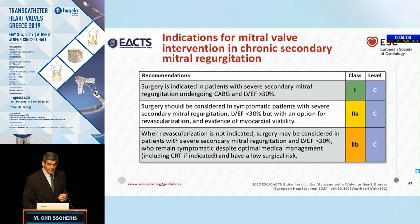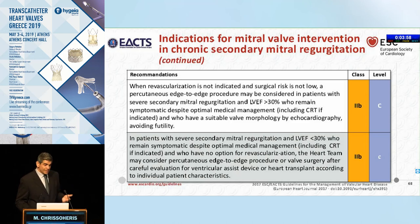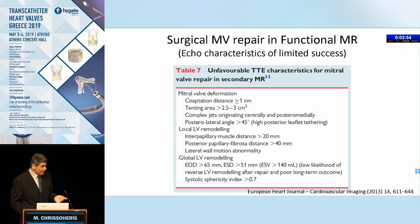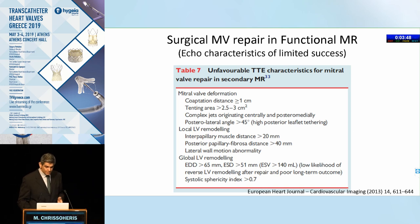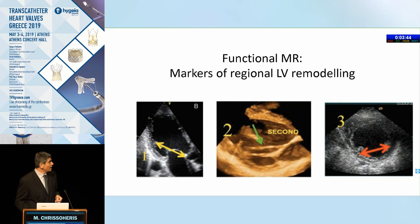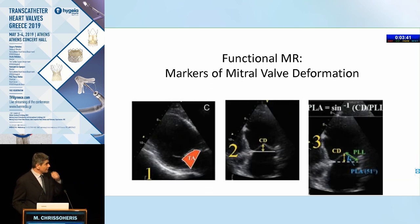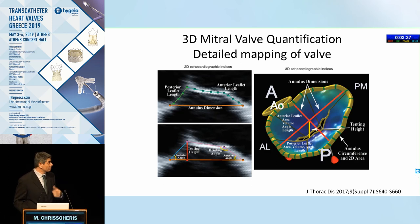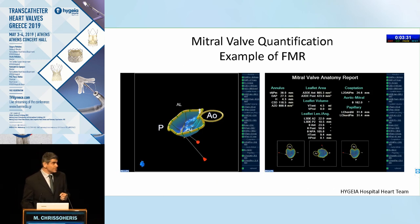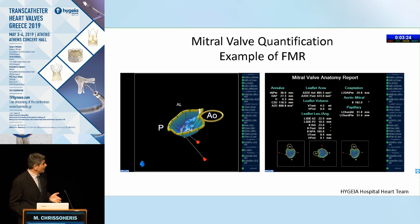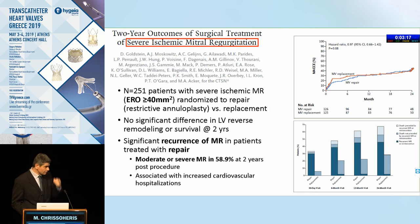Moving on to secondary or chronic functional mitral regurgitation: surgery has less of a role to play, and transcatheter options are becoming more prominent. Certain echocardiographic features — including significant global and regional LV remodeling as well as significant deformation of the mitral valve — suggest an increased risk of failure of surgical repair. 3D echocardiography can provide information to the surgeon regarding annulus size, the angulation of the posterior leaflet, and other parameters important in devising a repair or replacement strategy.